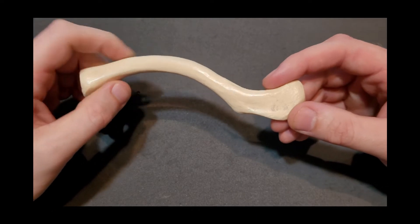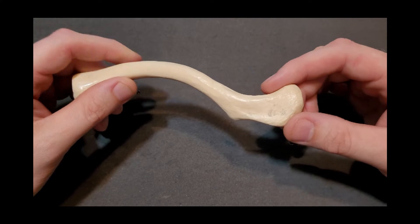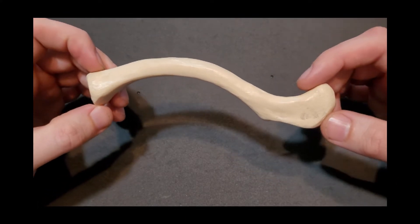So this is the acromial end, otherwise known as the lateral end. So this portion of the bone articulates with the scapula, specifically the acromion process of the scapula.